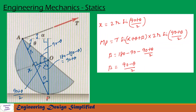Now we find distance x from A to P. The perpendicular from O bisects AP, so x/2 = r·sin(90 + theta/2), giving x = 2r·sin(90 + theta/2). The component of T perpendicular to line AP is T·sin(alpha + theta + beta). Therefore, the moment about P is: Mp = T·sin(alpha + theta + beta) · 2r·sin(90 + theta/2).